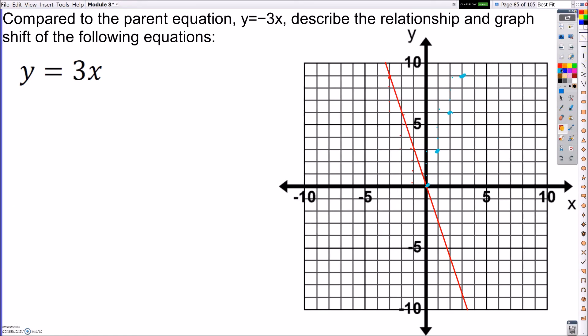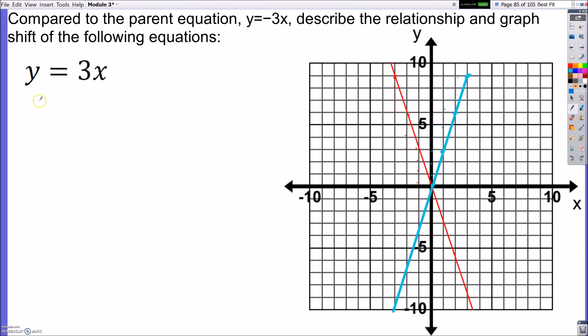The two lines have the same steepness. They're both equally as steep, but the difference is the direction. So the direction changes, but steepness is the same.